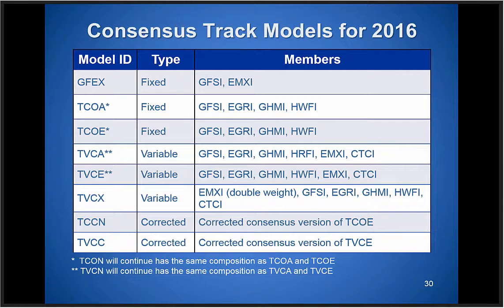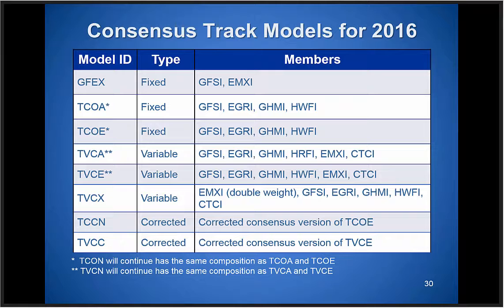Here are the definitions of the consensus models we're using this year. We have the GFEX — a consensus of the GFS and European. The main multi-model consensus aids are the TVCA and TVCE — both the same but with the ability to include or exclude models by basin. Right now, the main consensus aid has six members: the GFS, UK MET, GFDL, HWARF, ECMWF, and the Navy's COAMPS-TC model, which was added this year to both the track and intensity consensus aids for both basins. These consensus aids serve as our first guess for the best track forecast each cycle.